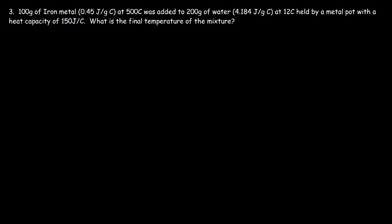This is going to be the last question in this tutorial. We have 100 grams of iron metal at 500 degrees Celsius added to 200 grams of water at 12 degrees Celsius. The mixture is going to be held by a metal pot — the water is already inside the metal pot, and then the iron metal is added to it. What is the final temperature of the mixture?